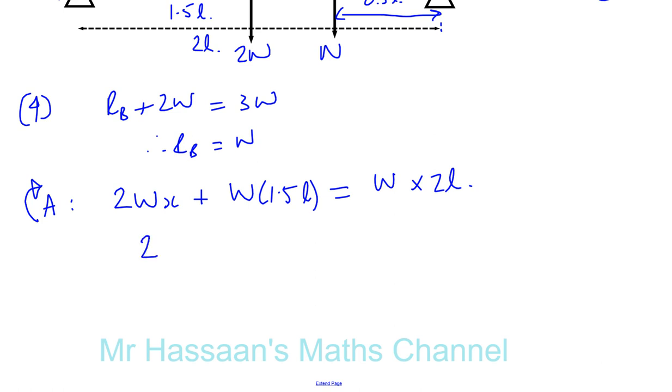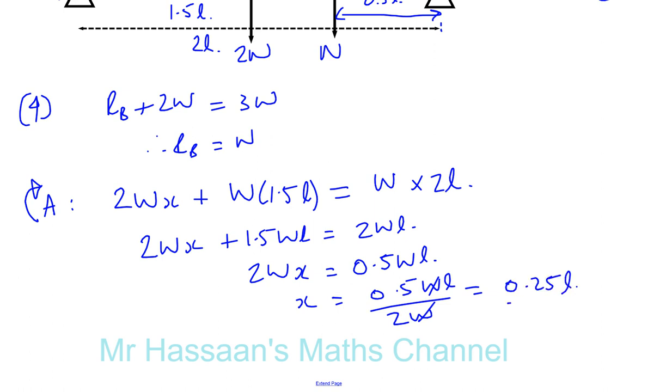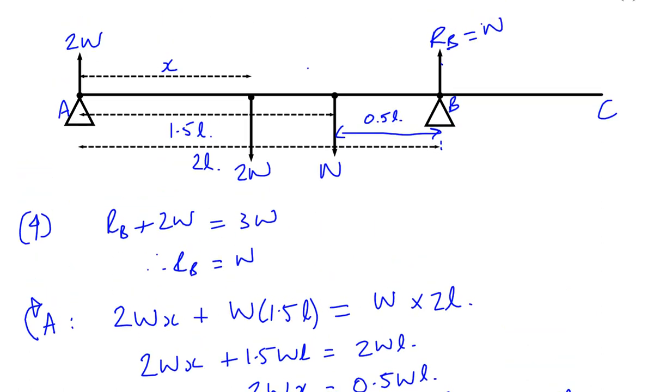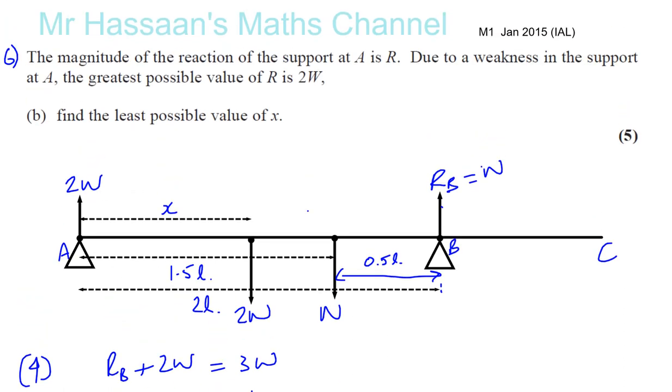If we now just simplify this. So, we're going to have 2Wx plus 1.5WL is equal to 2WL. So, 2Wx is going to be 2WL minus 1.5WL, which is 0.5WL. So, x is going to be 0.5WL over 2W. Okay. So, you're going to have 0.5 divided by 2, which is 0.25. So, you have 0.25L is the value of x, such that the reaction force at A does not exceed 2W. That's the maximum it reaches. Okay. So, that's the least possible value of x. It's going to be 0.25L.